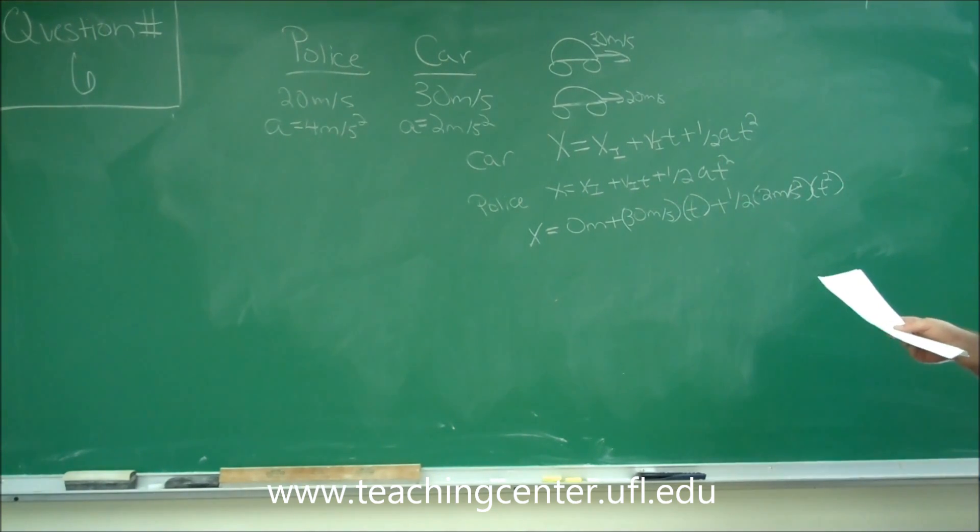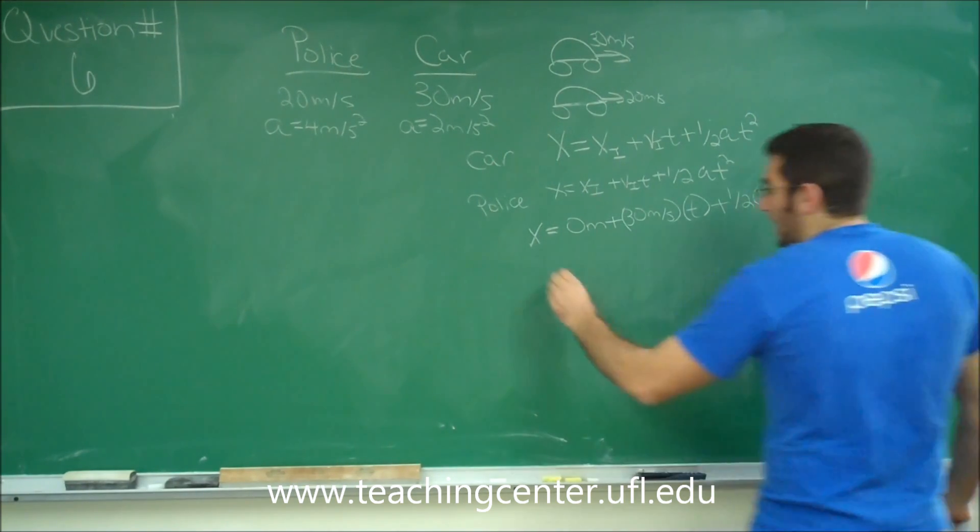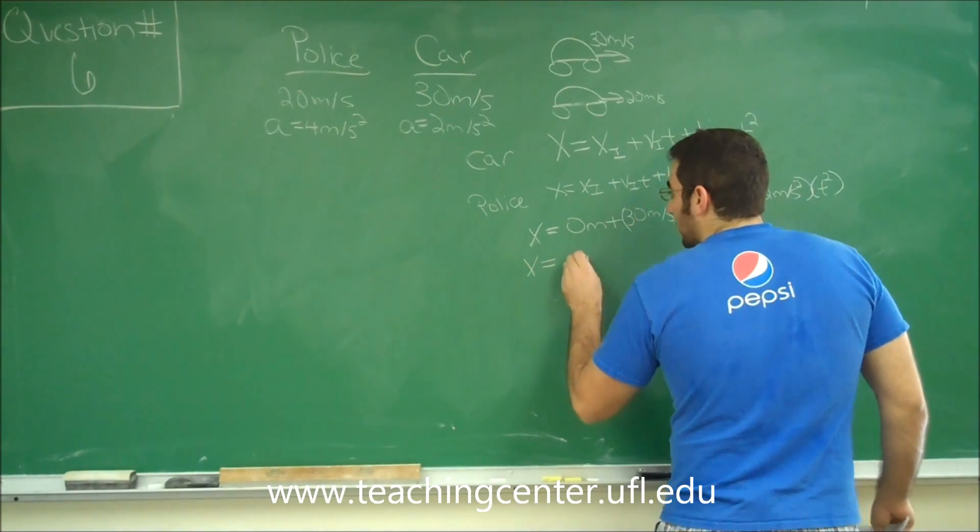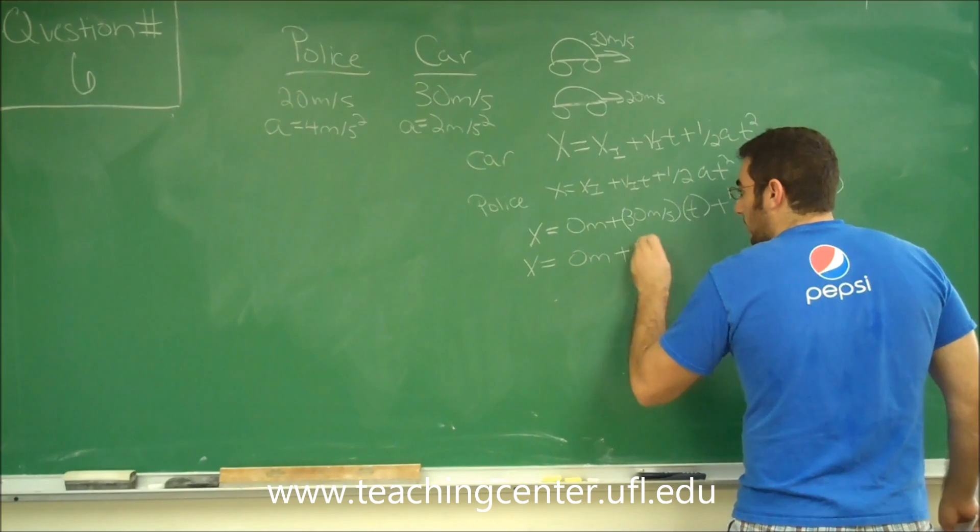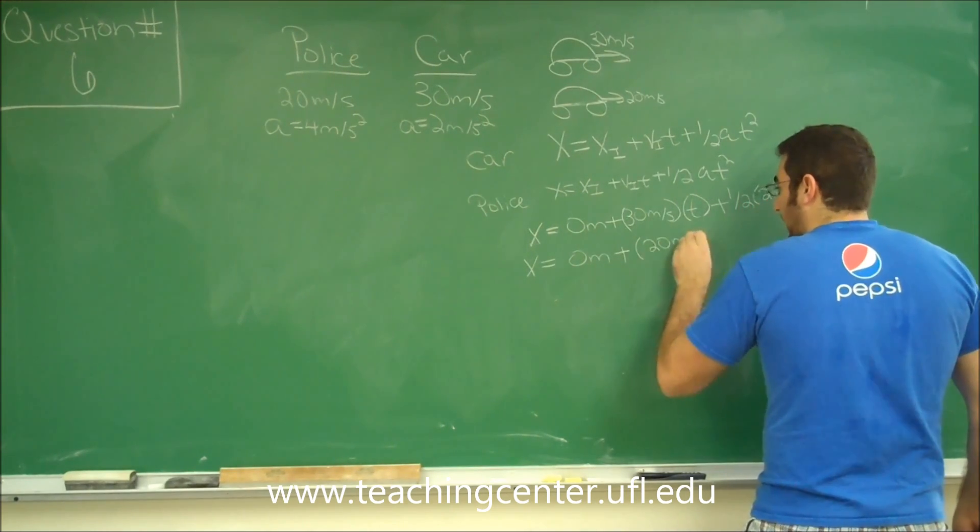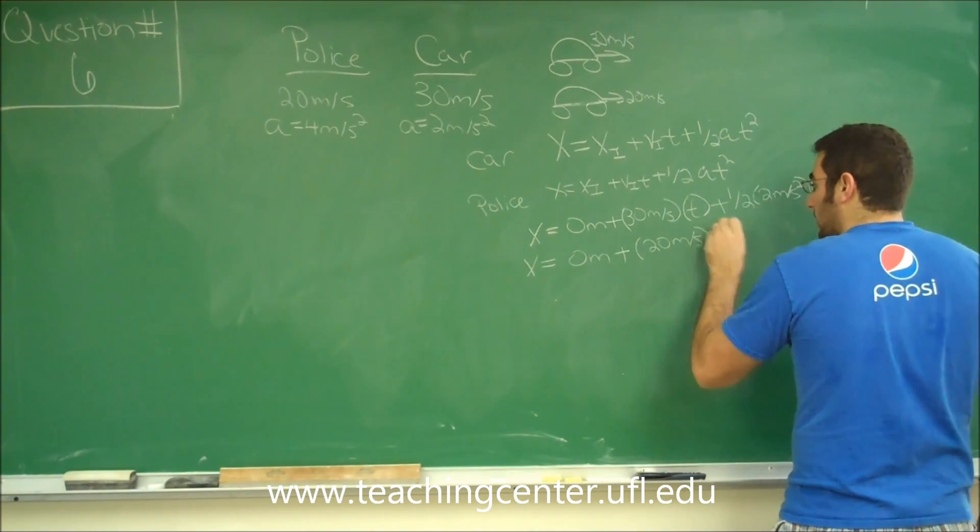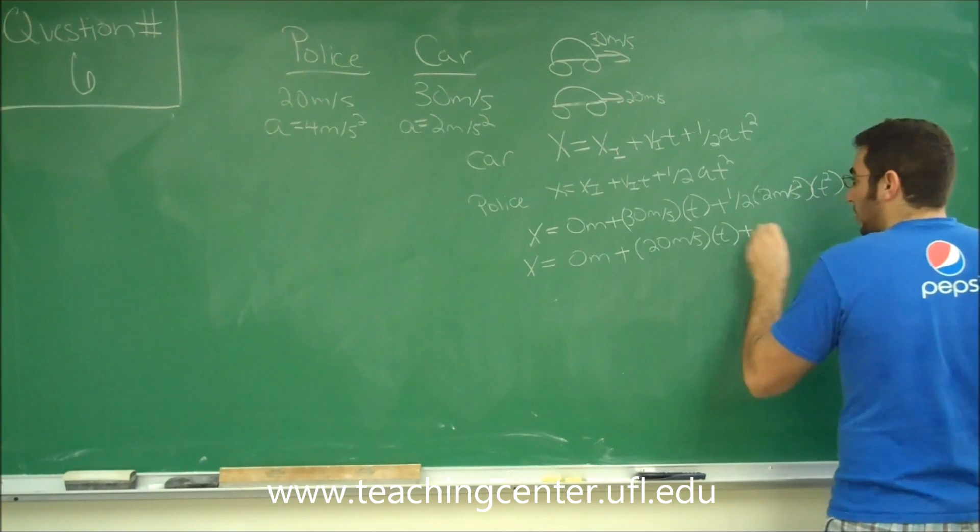Now for the police officer, x equals the same thing, 0 meters. But he's only going 20 meters per second. t, we don't know.